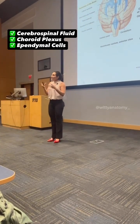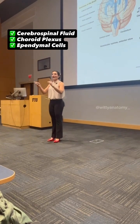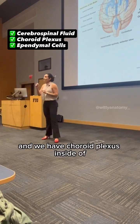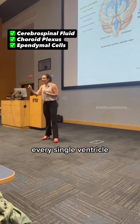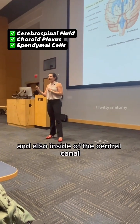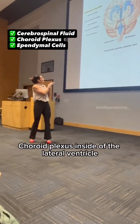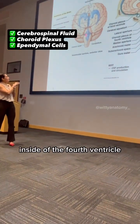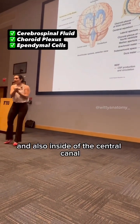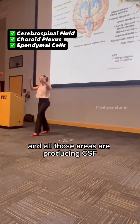So the choroid plexus is where we have the production of CSF. We have choroid plexus inside of every single ventricle and also inside of the central canal. So you have choroid plexus inside of the lateral ventricle, inside of the third ventricle, inside of the fourth ventricle, and also inside of the central canal. And all those areas are producing CSF.